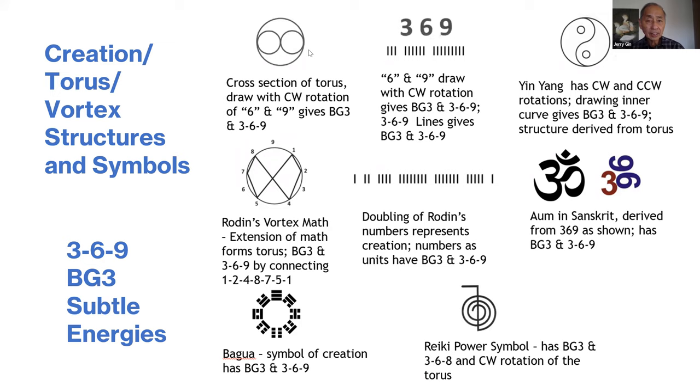I drew that with a clockwise rotation, and lo and behold, we have BG3 energies. I had not yet discovered the new energy of 369, but later I discovered ways of detecting 369. The structure gives both BG3 and 369 energies.